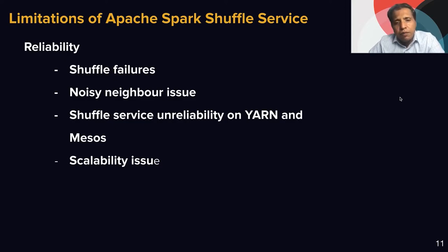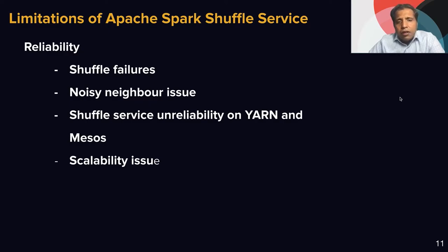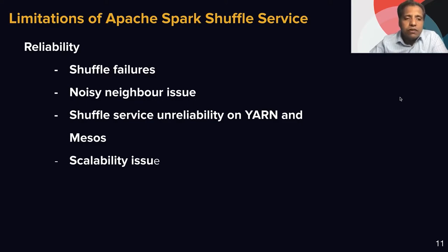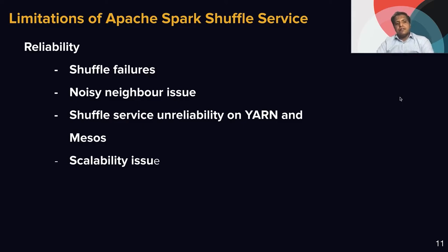We have a shuffle service running on YARN as well as Mesos, and it's pretty unreliable. We've seen many cases where they get out of memory or crash. The YARN node manager gets crashed because of the shuffle service. In Mesos, the reliability of the shuffle service is very low — we have to run a daemon to restart it after a few days and even monitor that daemon in case it crashes. The reliability of these shuffle services is very shady, causing a lot of failures.